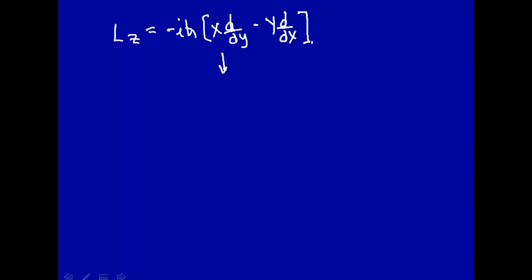If we take that transformation of coordinates and apply it to the angular momentum operator, then we get minus iℏ times the first derivative with respect to that angle phi.